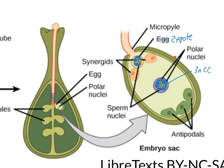As this ovule and some of the surrounding tissue develops into a seed, this zygote will undergo lots and lots of mitosis to form an embryo — basically a collection of cells that will eventually become the plant. And the central cell will also divide several times by mitosis, and those cells serve to provide nourishment to the growing embryo.